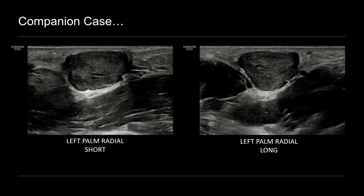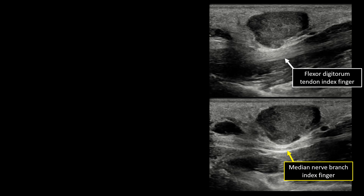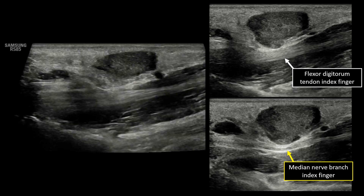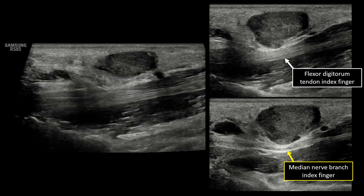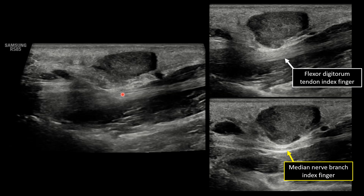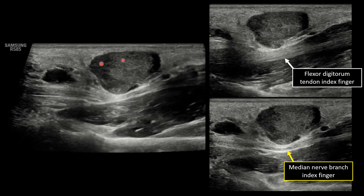When we adjust our transducer, we can see that the posterior aspect of the mass does abut a flexor tendon. This was the flexor digitorum tendon leading out to the index finger. And also in that same plane, when we turn slightly off axis, we can see that it also abuts this thin hypoechoic curvilinear structure, which is a median nerve branch headed out to the index finger. We want to evaluate the relationship with this structure and the underlying tendon and neurovascular structures. When we evaluate this with real-time imaging — here we're having the patient flex their second finger — notice that the mass abuts the flexor tendon but does not significantly move with the tendon.